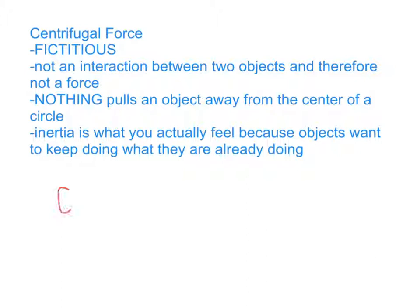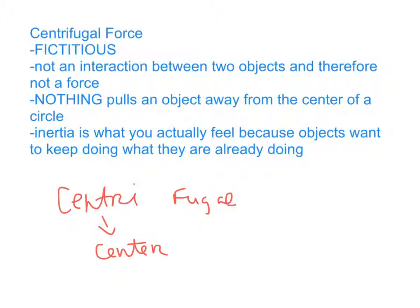Objects by nature want to move in a straight line. Your inertia makes you feel as though you're being pulled away from the circle, because your body wants to move in a straight line while an outside force pulls you toward the center. 'Centrifugal' breaks into 'centri' meaning center and 'fugal' meaning fearing — so there's no center-fearing force. For example, on a carnival Gravitron, you feel pushed into the wall — that's just your body resisting circular motion, not a real outward force.